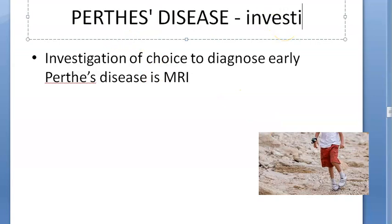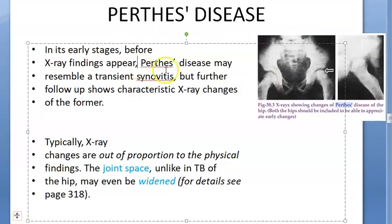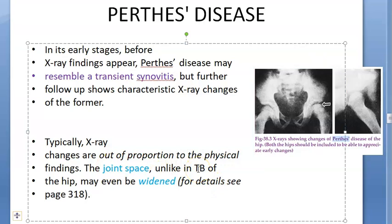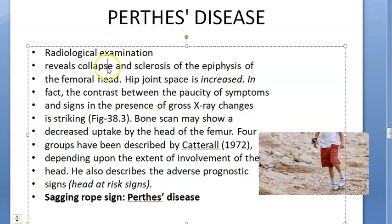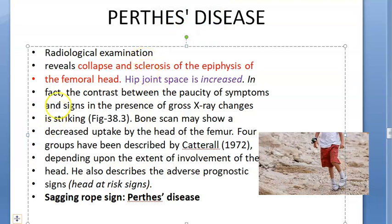For investigations, the investigation of choice for early Perthes' disease is MRI. In early stages on X-ray, it may resemble transient synovitis. Later, X-ray shows striking changes out of proportion to the physical findings: joint space is widened — unlike TB hip where joint space is not widened. There is also collapse and sclerosis of the epiphysis of the femoral head due to necrosis, producing coxa plana.